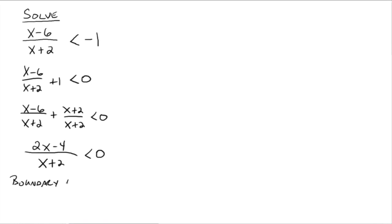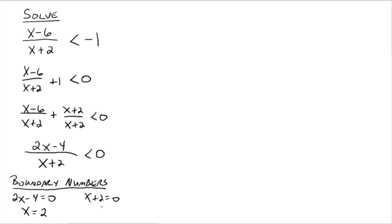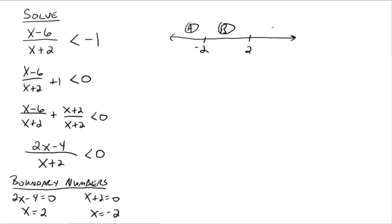Now let's get the boundary numbers: what makes the numerator equal to 0 and what makes the denominator equal to 0. From the numerator, 2x minus 4 equals 0 gives x equals 2. From the denominator, x plus 2 equals 0 gives x equals negative 2. So the boundary numbers are 2 and negative 2. Draw a number line with negative 2 and 2, giving regions A, B, and C.